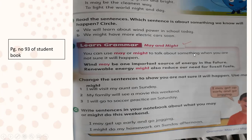You can use may or might to talk about something when you are not sure it will happen. We use may or might when there is less possibility and you're not sure something is going to happen. Let's read the example: 'Wind may be one important source of energy in the future' — we're not sure, but there's a possibility. 'Renewable energy might also reduce our need for fossil fuels.'